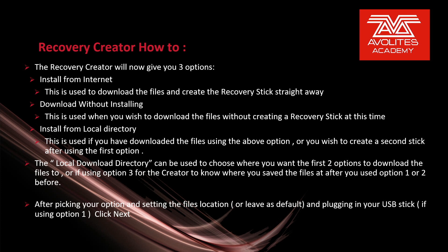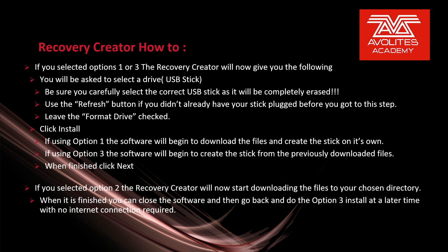After picking your option and setting the file locations or leaving it as default, and plugging in your USB stick if using option 1, click Next. After clicking Next, if you selected options 1 or 3, the Recovery Creator will ask you to select a drive — the USB stick. Be sure to carefully select the correct USB stick as it will be completely erased. Use the refresh button if you don't see it. Leave the format drive checked. Click Install. If using option 1, the software will begin to download the files and create the stick. If using option 3, the software will create the stick from previously downloaded files. When finished, click Next.